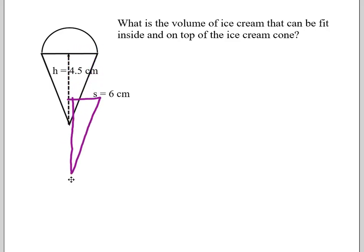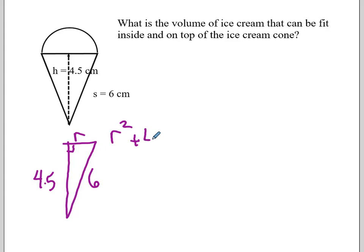If I highlight that and drag it down, I know a couple dimensions already. I know this is 4.5, I know this is 6. I'm going to call this r and solve for that missing radius. This is at 90 degrees, so I'm going to have r squared plus 4.5 squared equals 6 squared. So r squared equals 6 squared minus 4.5 squared.